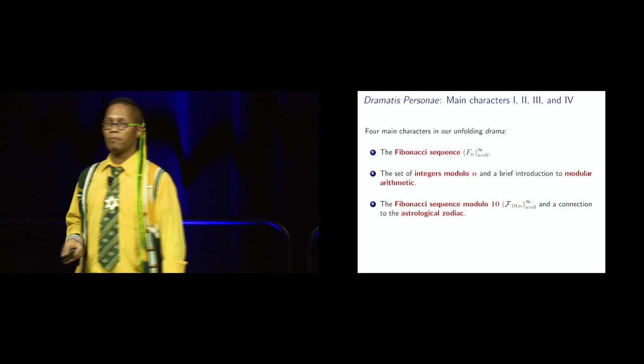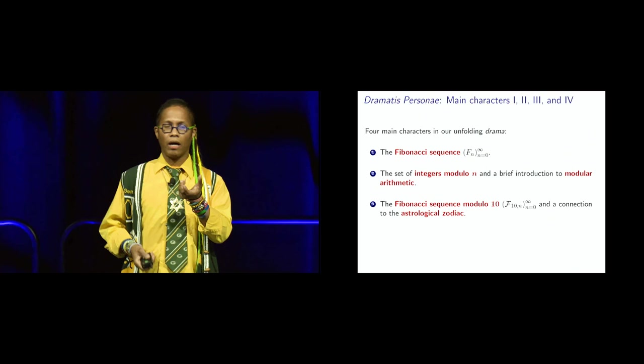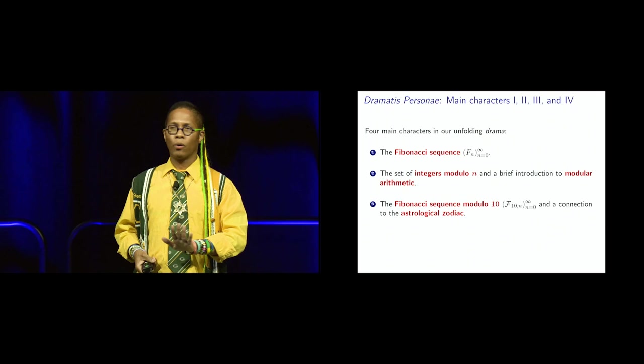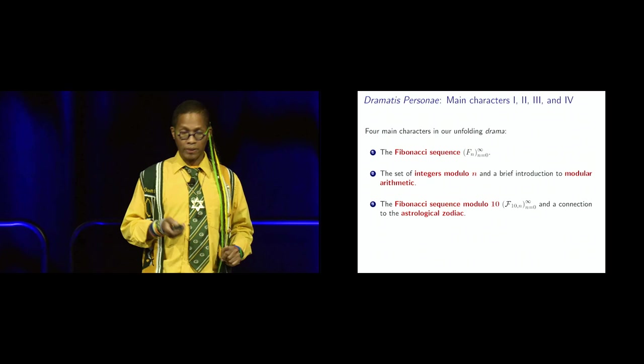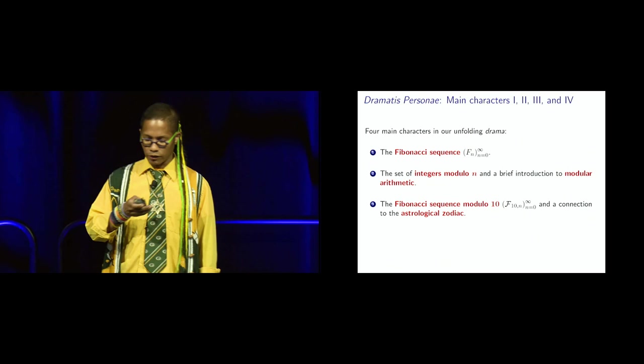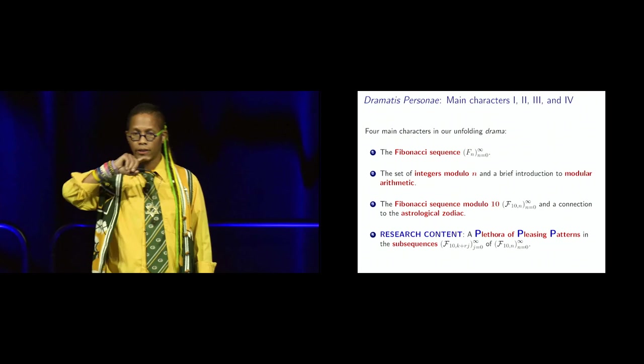And then the Fibonacci sequence modulo 10, I'm going to do math cal. I'll just call it curly F, 10 comma N, the double index, the extreme chip, the first index, it says it's the modulo. Eventually, I want to extend this to all moduli, but, so I'm keeping that 10 in there, although it's never going to change. That left subscript, this is going to be kicking it the whole time. But the right subscript is giving you the index that's changing, the end. And then a connection to the astrological zodiac. Actually, I think I did that already. And then the research content.